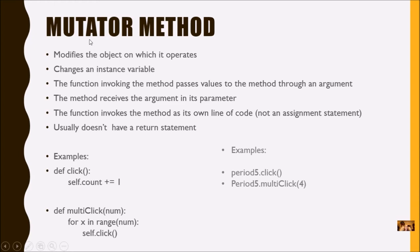A mutator method modifies the object on which it operates — it's going to change an instance variable, so some kind of math or work is actually going on. The function invoking the method passes values through an argument to a parameter. Importantly, the function invokes the mutator as its own line of code — it's not part of an assignment statement — and the method itself usually doesn't have a return statement.